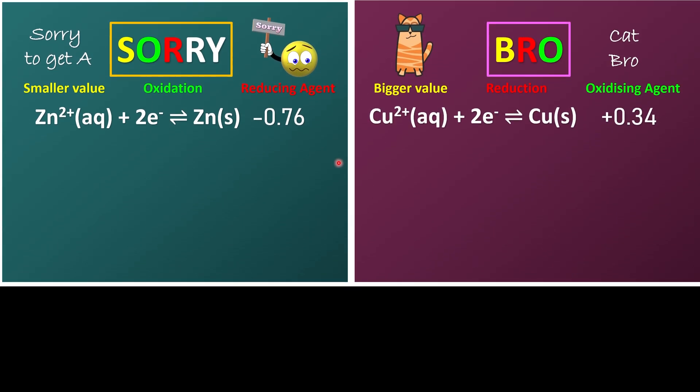So the first thing we're going to do is, once we decide who has a smaller value, we're going to reverse the equations. Where zinc supposed to be on the right-hand side, now we're going to write it down on the left-hand side.